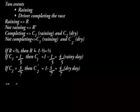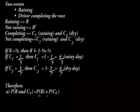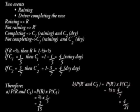Therefore, for (a), P(R and C1) = 2/3 × 1/5 = 2/15. For (b), P(R' and C2') = 1/3 × 4/7 = 4/21.